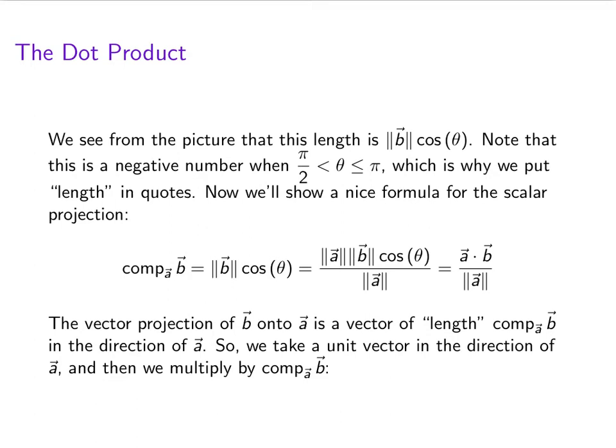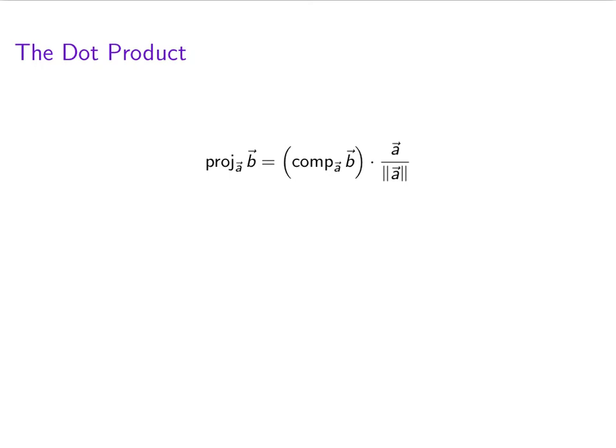What we'll do to get this vector projection is we'll take a unit vector in the direction of A, and then multiply by the component of B in the direction of A. Here what you should see is that we've started with a unit vector in the direction of A, and then we multiply by the component of B in the direction of A.